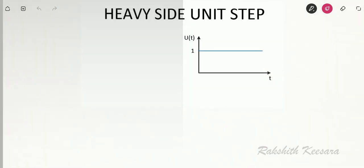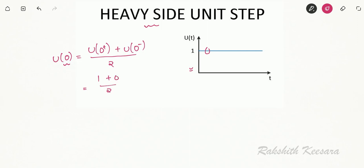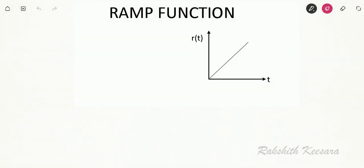That new signal is the Heaviside unit step, where the amplitude at t equal to 0 is defined as u(0) equal to [u(0+) + u(0-)] divided by 2. u(0+) is 1 and u(0-) is 0, so u(0) equals 1 by 2. We will use this result throughout the chapter. So u(t) will be 1 for t greater than 0, 0 for t less than 0, and 1/2 for t equal to 0.